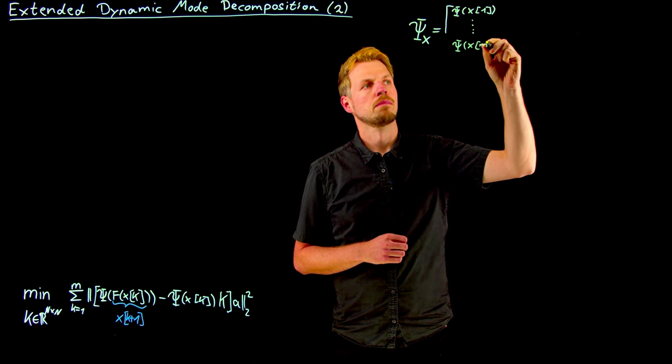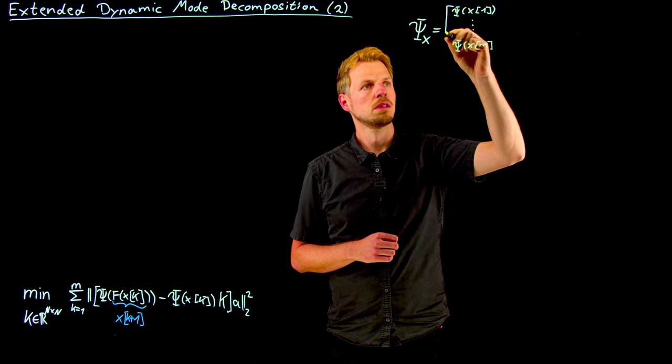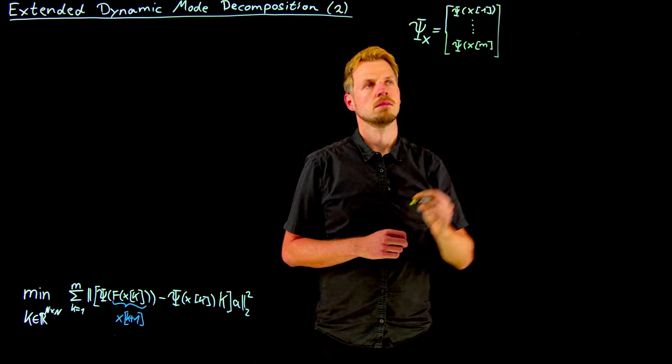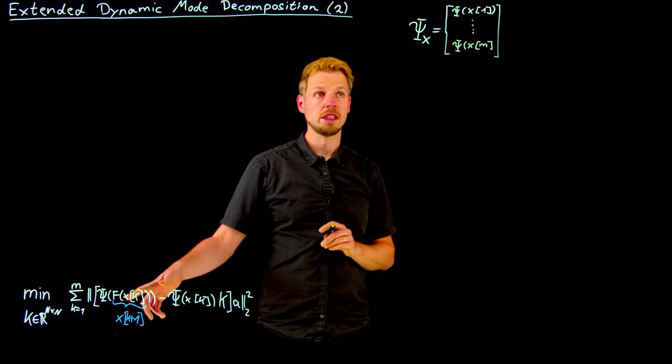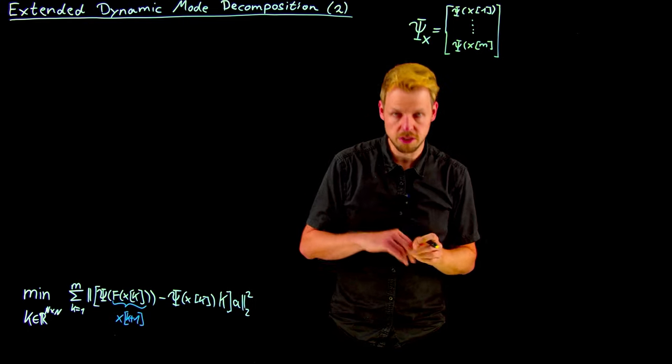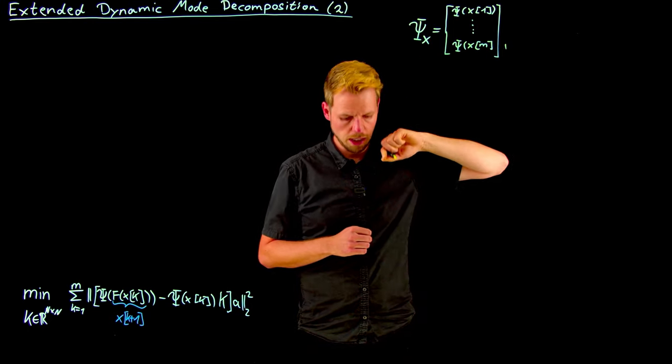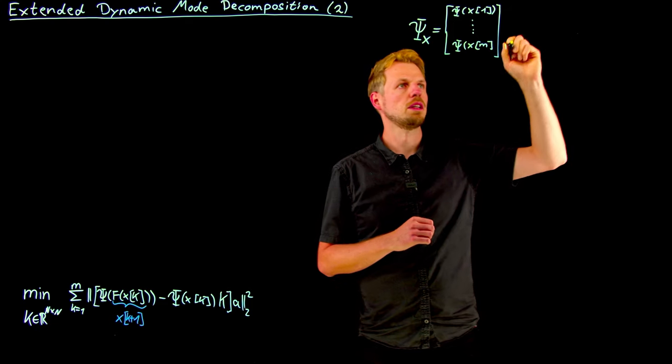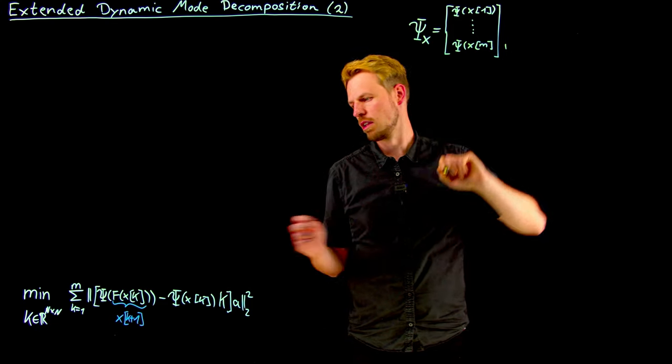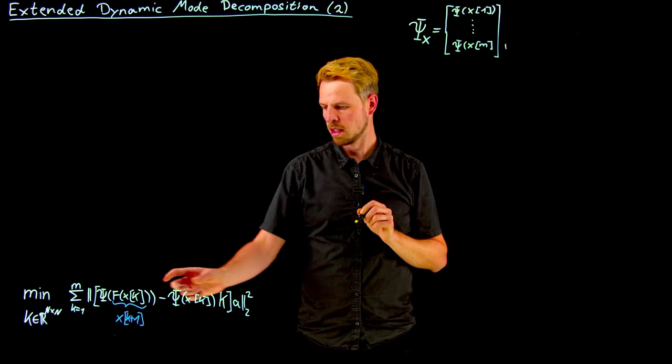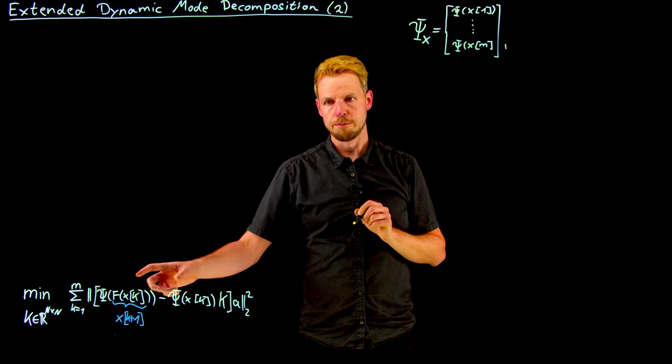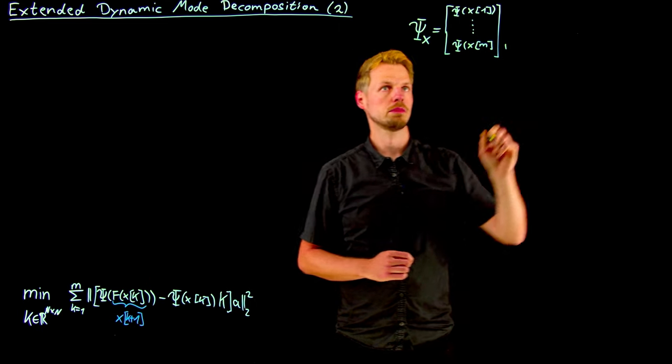Let's say this is my psi of x1, all the way to psi of xm. But this depends on how you name the number of samples that you have if it's a trajectory of m plus 1 samples which means you get m of these tuples.